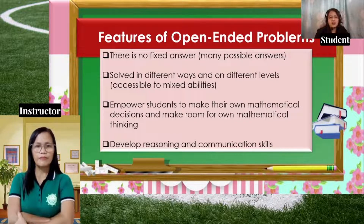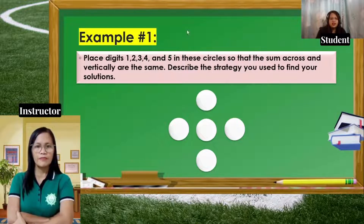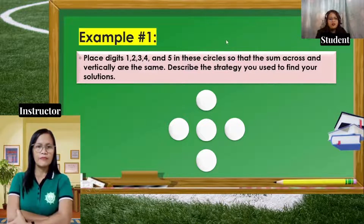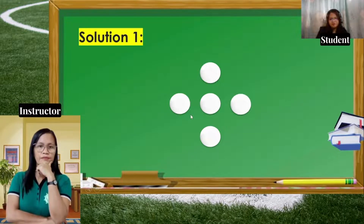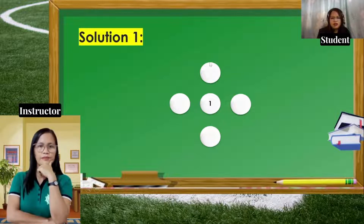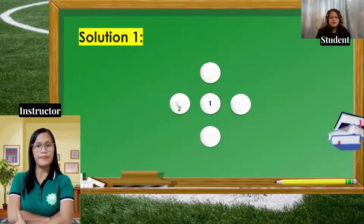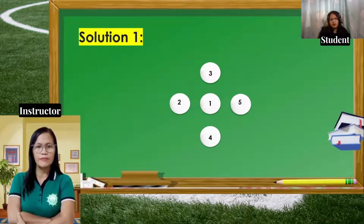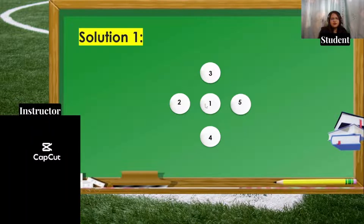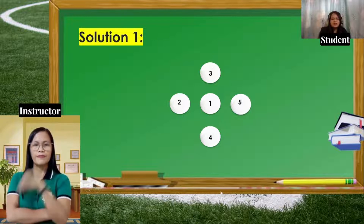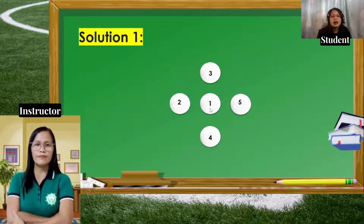Let's have an example for open-ended problems. Place digits 1, 2, 3, 4, and 5 in the circles so that the sum across and vertically are the same. Describe the strategy you use to find your solution. This problem has many possible solutions. For example, if we put 1 at the center: 2 on one side, 5 on the other, 3 on top, and 4 on the bottom — the sum across is 2+1+5=8, and vertically 3+1+4=8 also. So across and vertically have the same sum of 8.